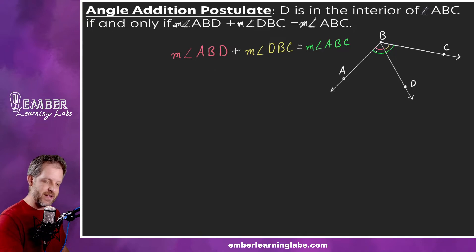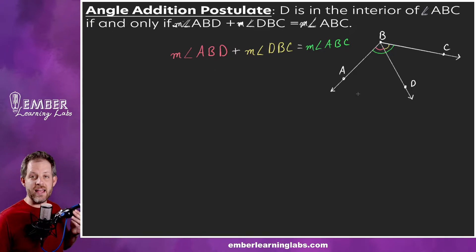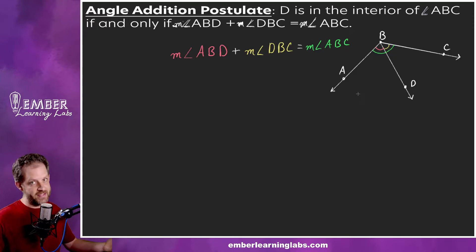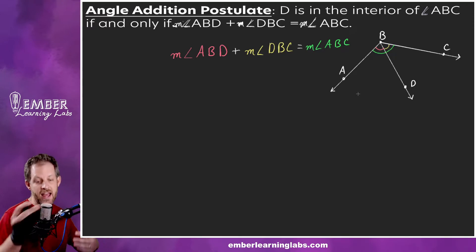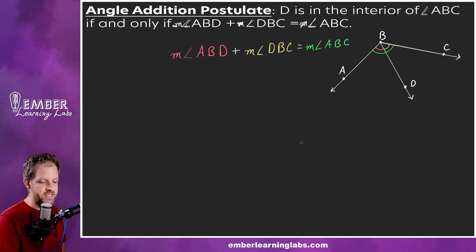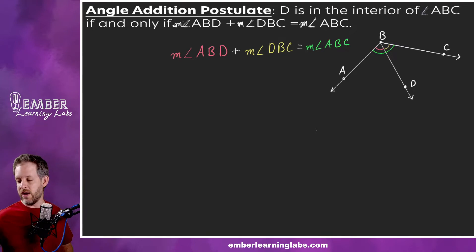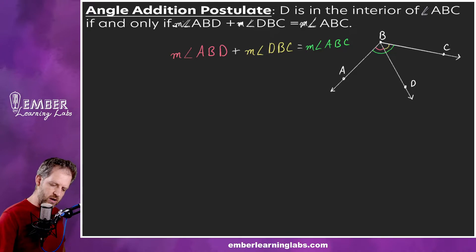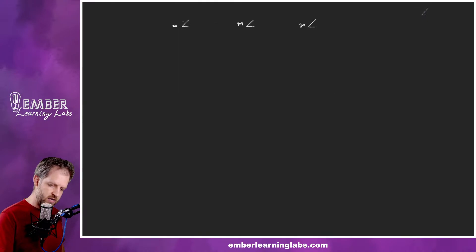So it's basically like the segment addition postulate except for angles. This makes sense — segment addition and angle addition. So basically in practice it means that we can take and add up these two angles that are inside and get the bigger angle. That's basically what that postulate says — pretty straightforward, right?